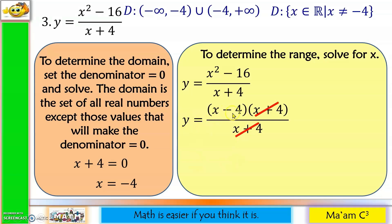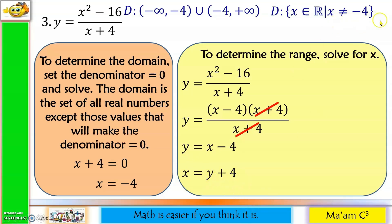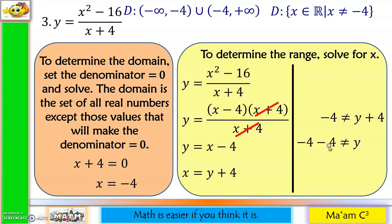Since y = x − 4, solving for x gives x = y + 4. Since x cannot equal −4, we require y + 4 ≠ −4, which means y ≠ −8. So negative 8 is excluded from the range. Range: the set of all real numbers except −8.